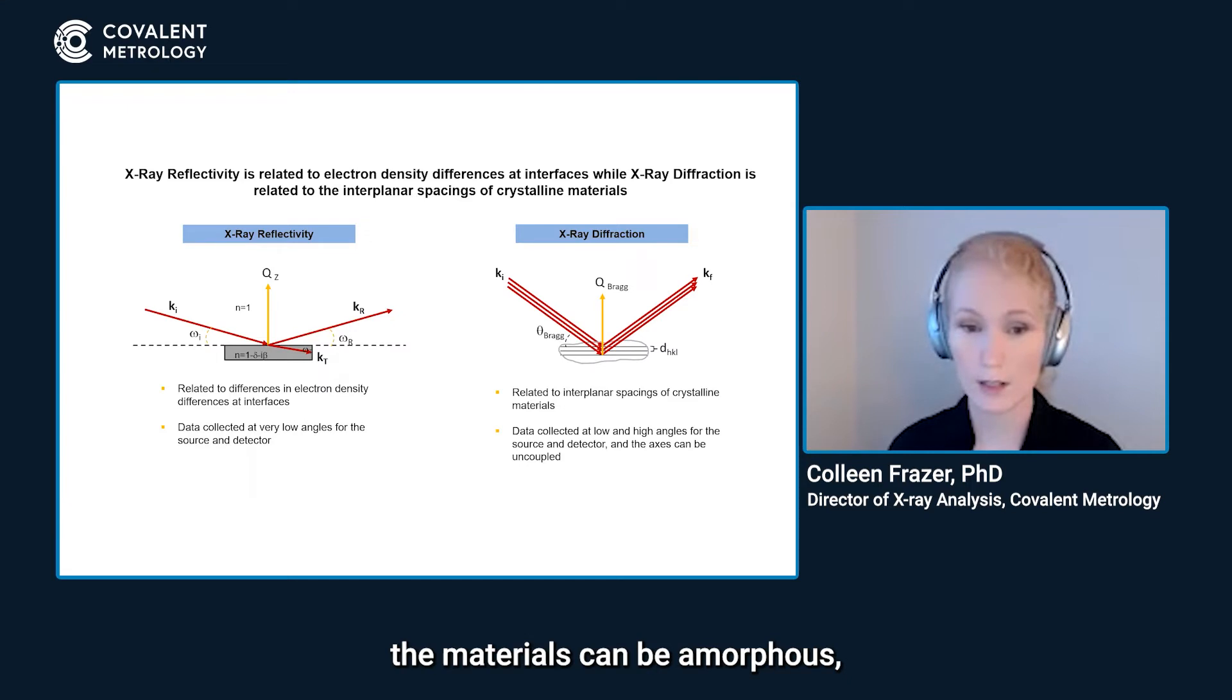the materials can be amorphous, which means no long range order. They can be crystalline. They can be liquid even. And we can still see these interference fringes just because there is a change in refractive index across interfaces.